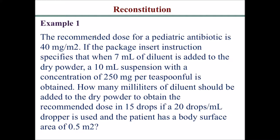you have a question that asks: the recommended dose for a pediatric antibiotic is 40 milligrams per meter squared. The package insert instructions specify that when 7 ml of diluent is added to the dry powder, you get a 10 ml suspension with a concentration of 200 milligrams per teaspoonful. Teaspoonful is important.